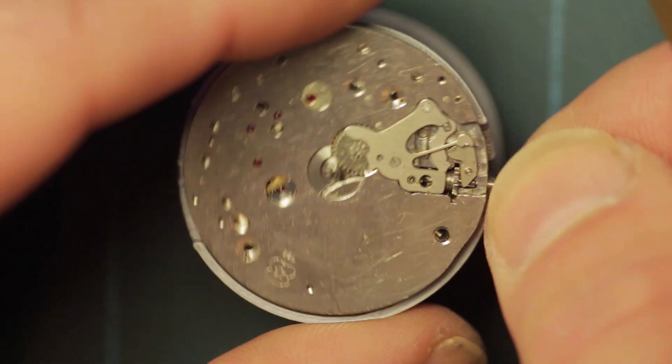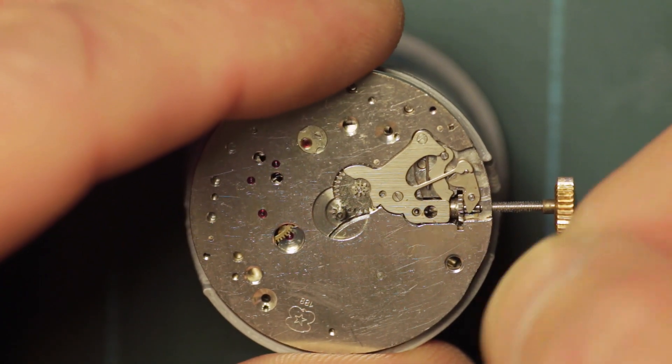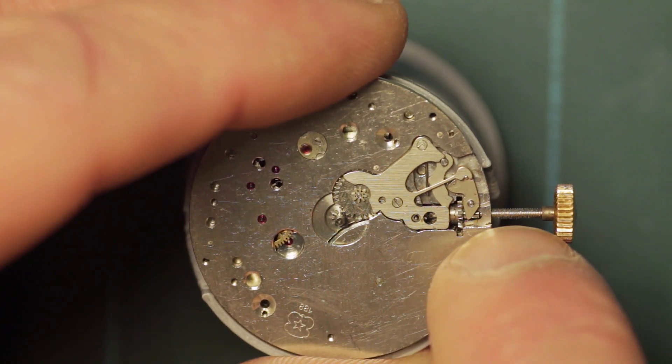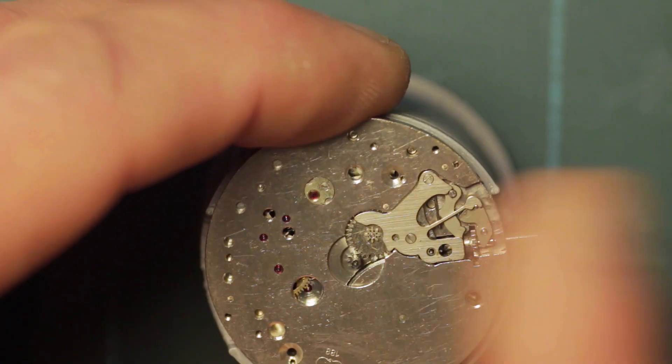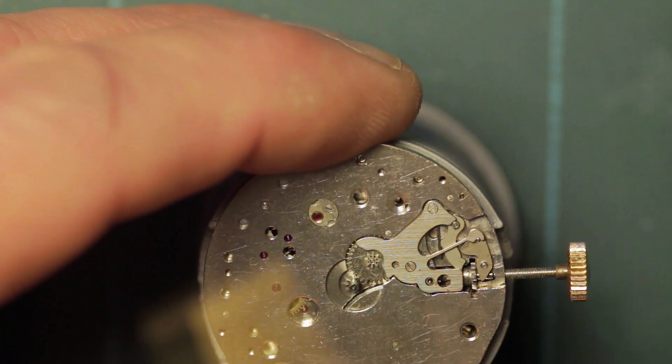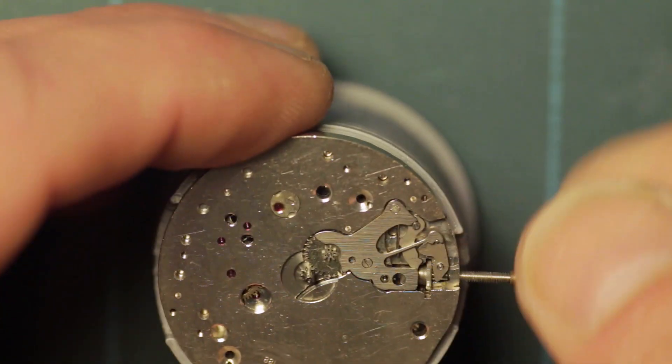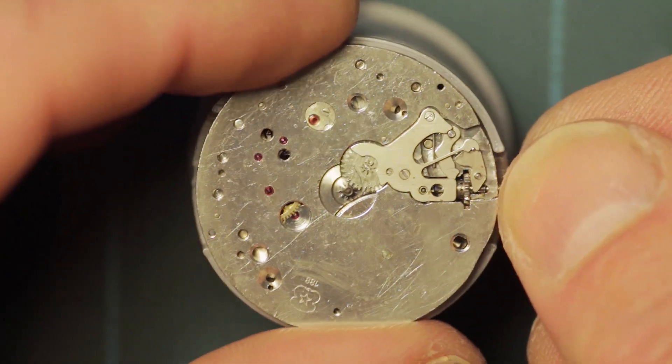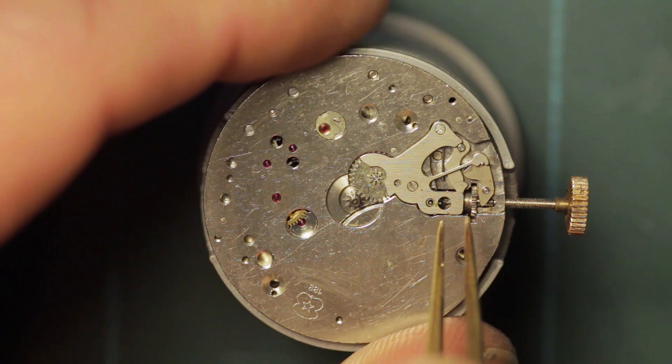If you try to force the stem in, it will quite often catch hold of the lug on the setting lever, pushing it that way and making it swivel. So as you're pushing the bottom that way, you're making the top swivel that way and it pops out of its spring detent there. That's something to watch for when you're removing and replacing stems on a movement, because you can't correct this without removing the hands and the dial.